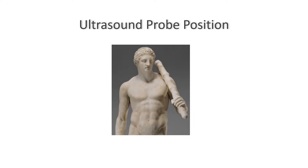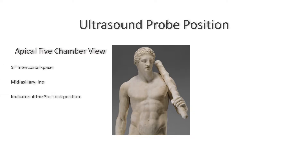Let's first talk about the ultrasound probe position. Just like in the apical 4 chamber view, place the probe at the point of maximal impulse near the 5th intercostal space at the mid-axillary line with the indicator of the probe pointing towards the 3 o'clock position. Once you get a good apical 4 chamber view, note that the aortic valve is a more anterior structure, meaning it is closer to the anterior chest wall, so the only thing you have to do is tilt the ultrasound beam towards the anterior chest wall and you will see the apical 5 chamber view.